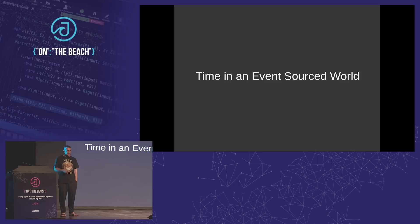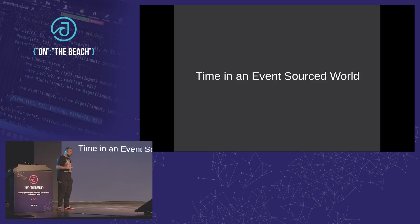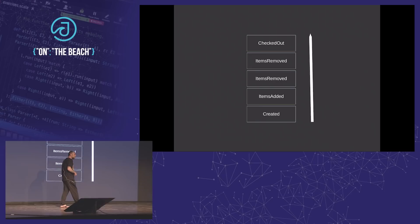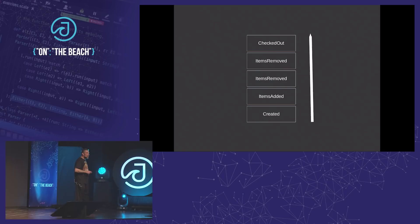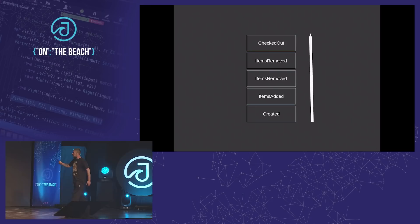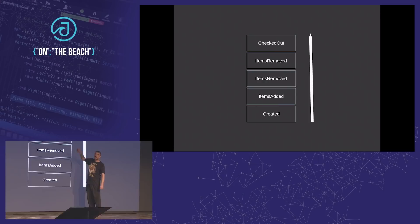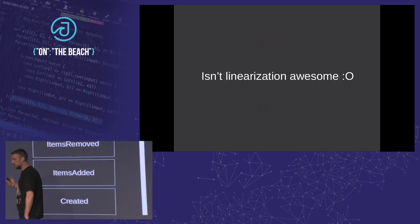How many people here have implemented an event sourced system before? We find the same problems in many other systems. Here we have something was created, we had some items removed, then some more items removed, and then eventually it was checked out. But how does time work in this? Normally in an event sourced system, everything is linearized. We come from the beginning and we go to the end. Unfortunately, this is not how things work in the real world.